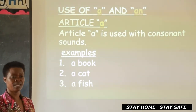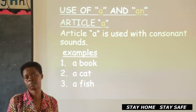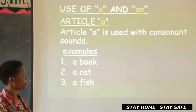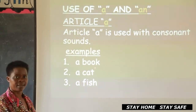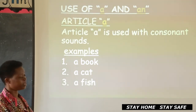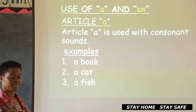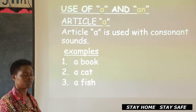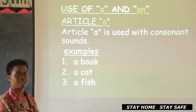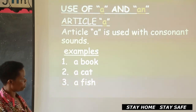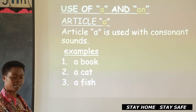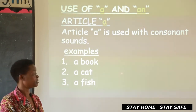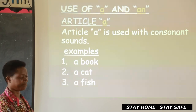Then we have this one — you have ever seen this domestic animal here: cat. You say 'a cat'. Why do we say 'a cat'? C is a consonant, and a consonant goes with A. So you say: I have seen a cat. There is a cat. A goes with the consonant sound. Then we have 'a fish' — the letter F is a consonant, that's why we say 'a fish'.